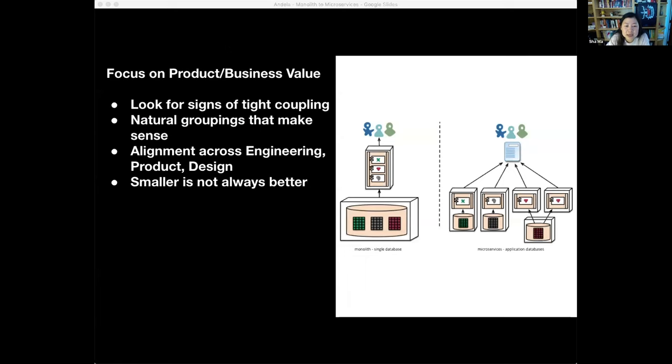Look for code and data that are often changed and deployed together to determine features or functionalities that are more tightly coupled. And use these as your natural groupings for what can be iterated on and deployed independently from other areas. Focusing on product and business value also helps with the organizational alignment across engineering, product and design. Keep in mind, breaking things up too small too early can often add unnecessary complexities and overhead. For example, you have to maintain separate deploy queues, more on-call responsibilities for everyone, and single points of failure due to the lack of shared knowledge.